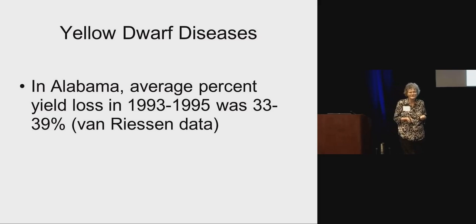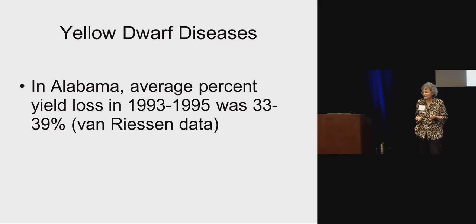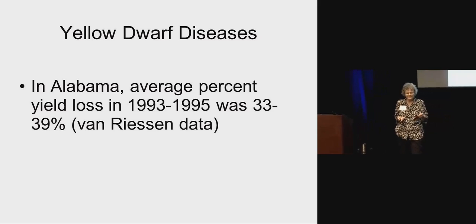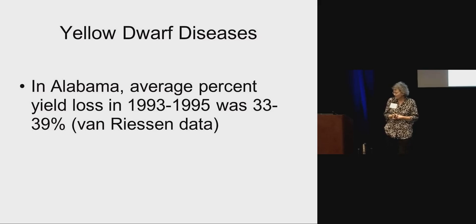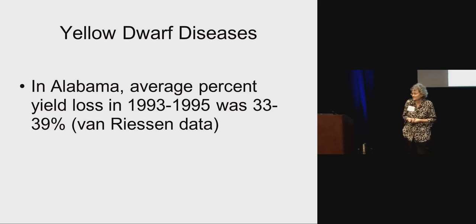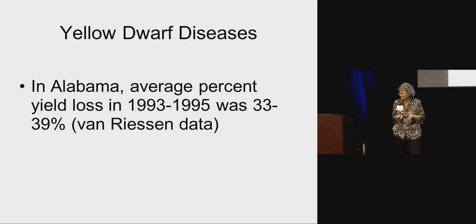Mostly what happens is that it's a sneaky disease. It'll be out there in the field, but it won't be dramatic like having your field wiped out by armyworms or Hessian fly. But year in, year out, it probably is responsible for more yield loss than our other insects that cause problems in wheat. A survey that Hank Van Riesen did years ago showed the average percent yield loss was 33 to 39%. So that's quite a lot that you're just subtly losing from this disease.